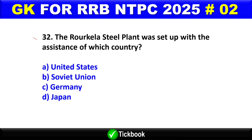Question number 32: The Rourkela Steel Plant was set up with the assistance of which country? Option C — sorry, Option B — is the right answer — Germany. The Rourkela Steel Plant is located in Odisha and was established in 1959.